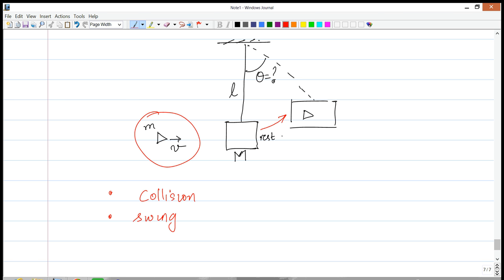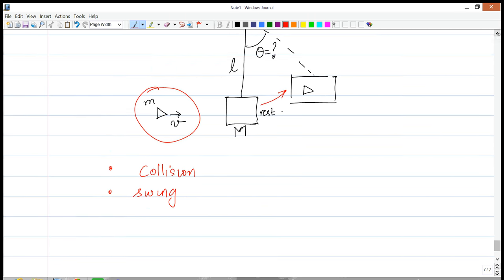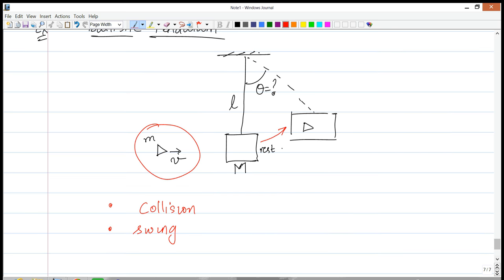In fact, we know how to deal with the swing. You've already done that in the previous chapter. But the collision is something new that we'll deal with. So let's first deal with the collision. Now, the bullet is moving towards the block with some speed v. It has momentum mv. The block is at rest. When the bullet collides with the block, the forces are internal. In the beginning, gravity is simply cancelled by the tension. So gravity doesn't come into play. The bullet gets embedded in the block, and those forces are simply internal.